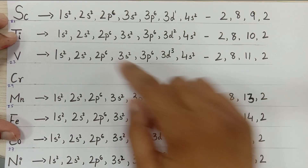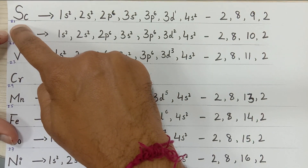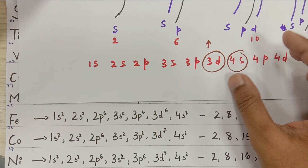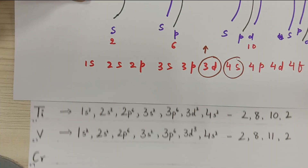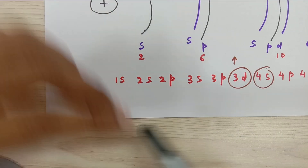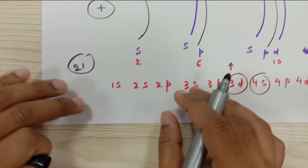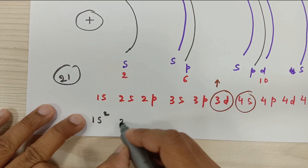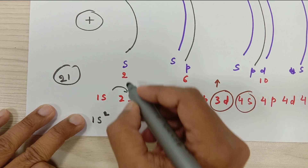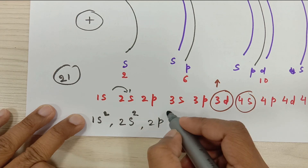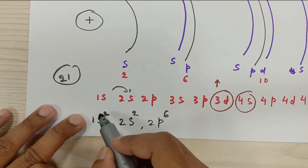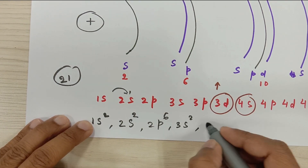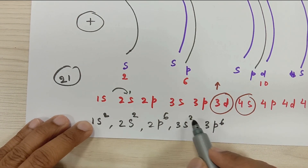Scandium has atomic number 21, and titanium, vanadium, and so on follow. For scandium, I need to arrange 21 electrons. Electrons fill the lowest energy orbit first: 1S2 — that uses 2 electrons. Then 2S2 and 2P6 — 2 plus 6 is 8, plus the previous 2 is 10. Then 3S2 and 3P6 — adding 8 more gives 18 electrons total.